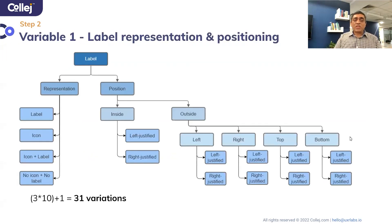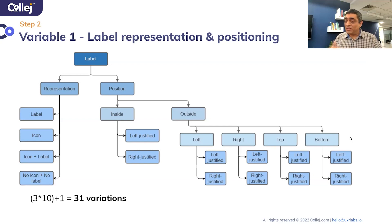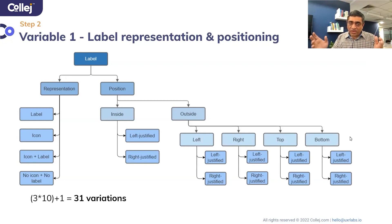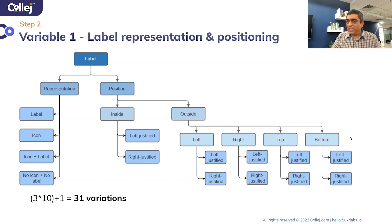Thinking about the representation of the label: you could have a label, or an icon, or an icon and a label, or no icon and no label — that's four variations. You can also think about positioning: the label can be inside the box, left or right justified, or outside the box on the left, right, top, or bottom, each of which can be left or right justified. Just by looking at the label, there are 31 possible ways to present your labels.